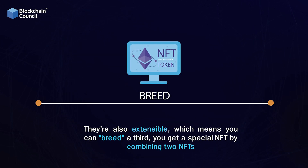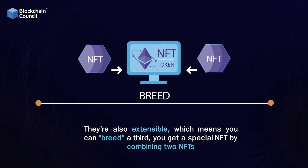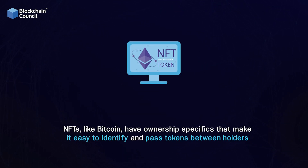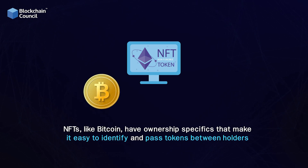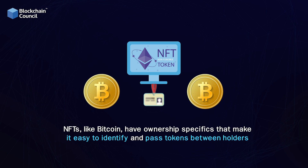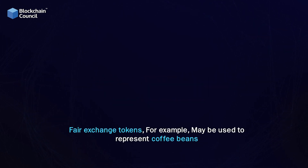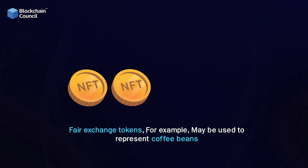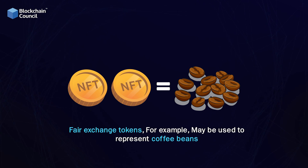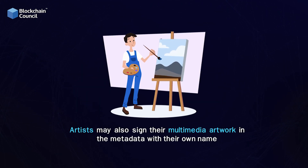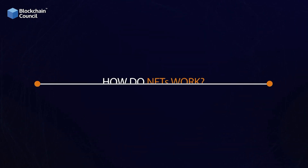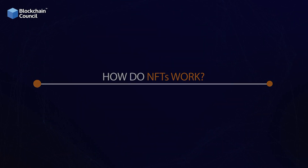NFTs are also extensible, which means you can breed a third — you get a special NFT by combining two NFTs. Like bitcoin, NFTs have ownership specifics that make it easy to identify and transfer tokens between holders. Owners also have the ability to add metadata or attributes related to the asset. Artists may sign their multimedia artwork in the metadata with their own name.